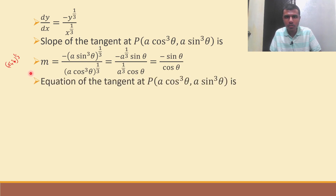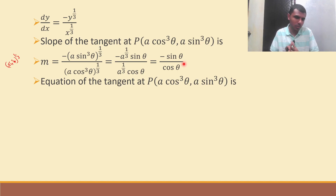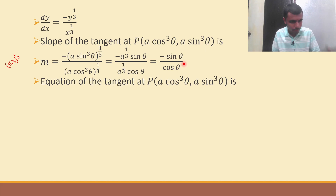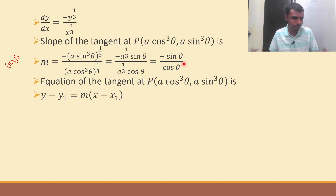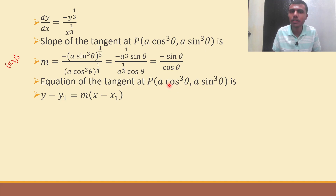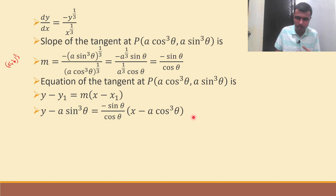To find the equation of the tangent, I have my point and my slope, so I use the slope-point form: y − y₁ = m(x − x₁). Here y₁ = a·sin³θ and x₁ = a·cos³θ. So: y − a·sin³θ = (−sinθ/cosθ)·(x − a·cos³θ).